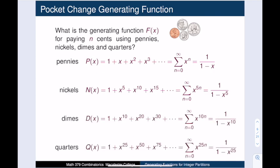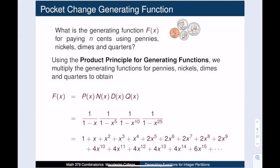By a similar argument, the dime generating function is 1/(1 − x¹⁰), and the quarter generating function is 1/(1 − x²⁵). Now we have all of our component functions and we are ready for the product principle. We are going to construct the generating function for paying with any of these four kinds of coins. The product principle tells us we obtain our desired generating function by multiplying these four component functions.